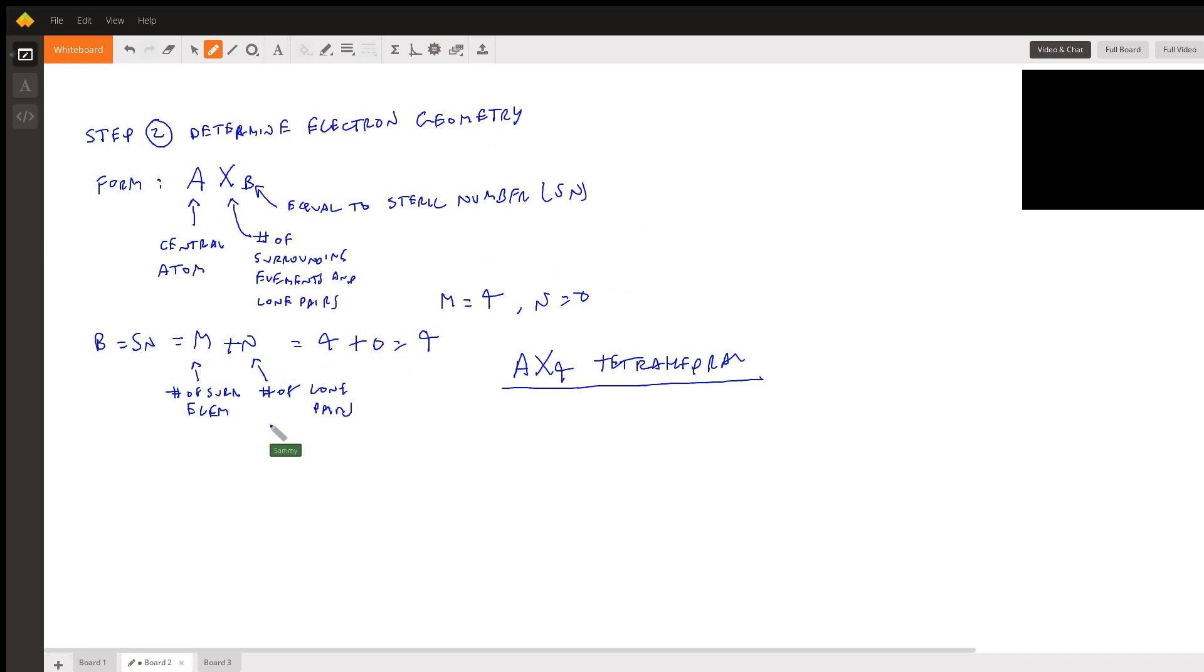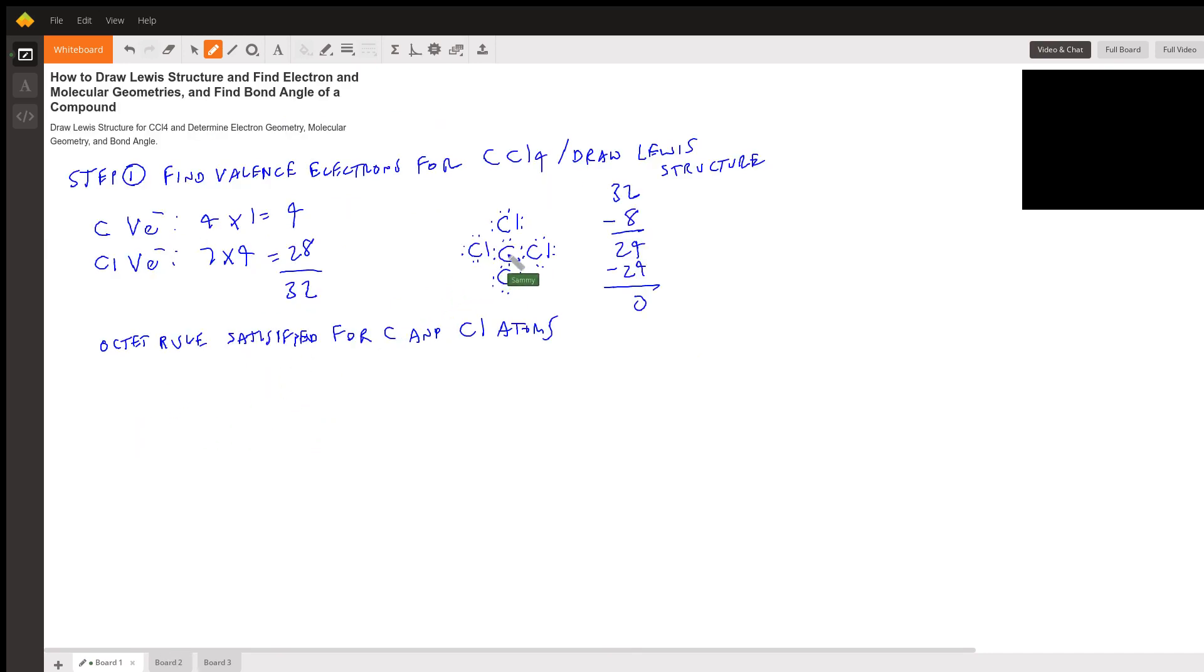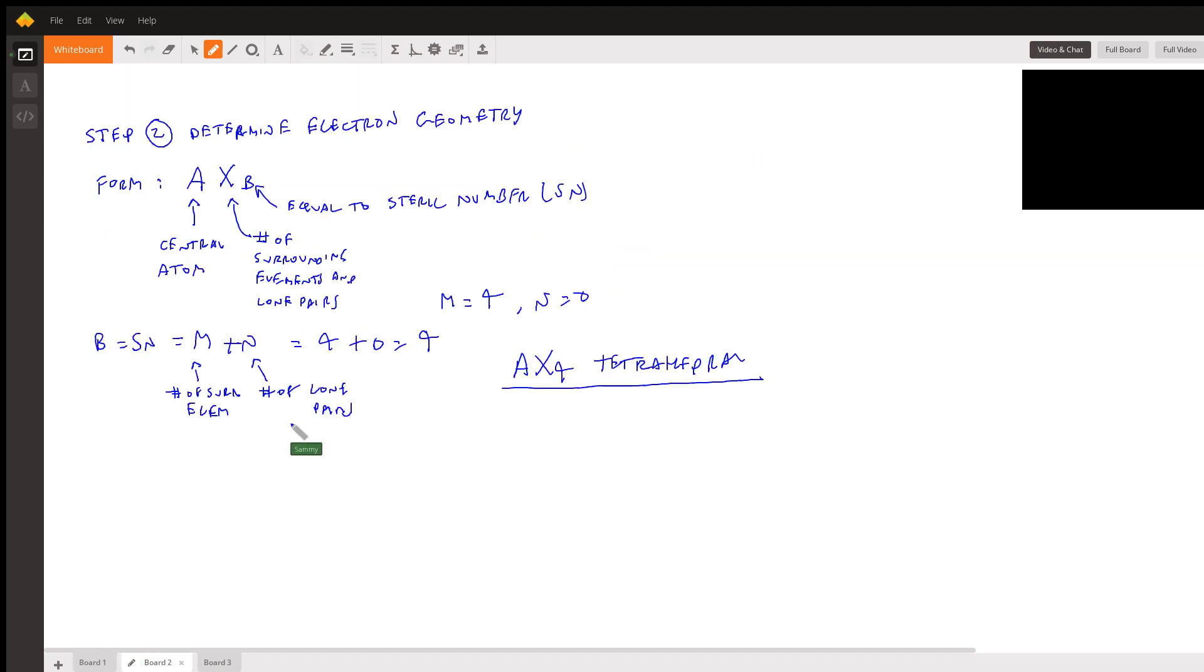Now the number of lone pairs, N, is the number of lone pairs that's on the central atom carbon. And as you can see, there are no lone pairs on the central atom of carbon. So N is equal to zero. So we just add those two together, we get four. So the steric number, which is equal to B, is four.